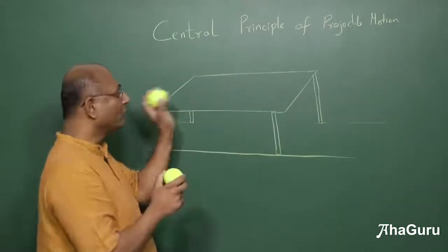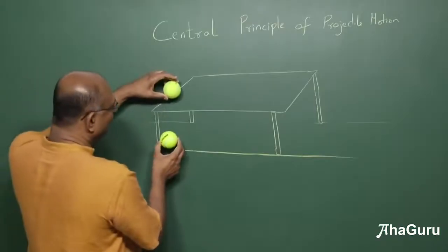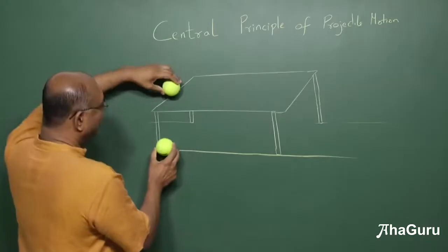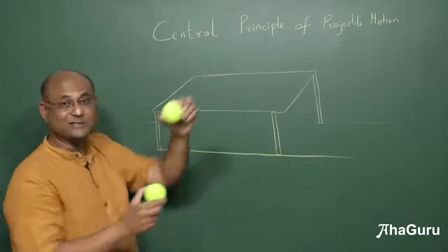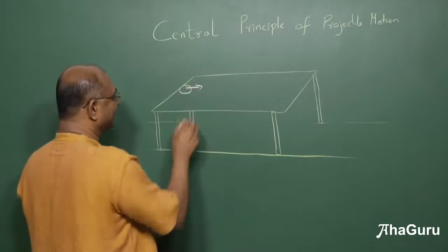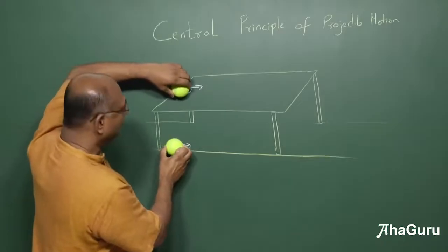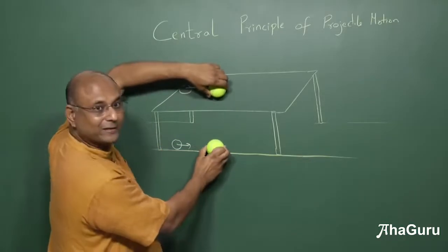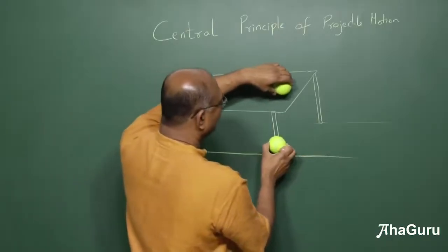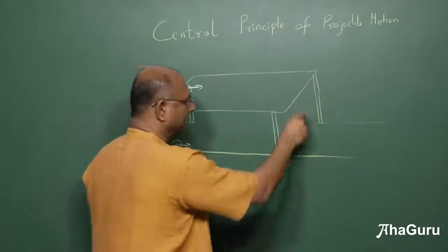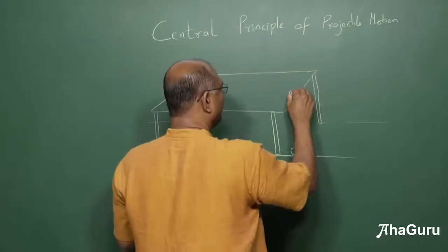I'll show a thought experiment since it's hard to demonstrate directly. Imagine a big table. I have two balls: one on the table surface and one on the ground. I give both the same velocity — say 3 metres per second. The reason I can't do this experiment easily is that giving both exactly the same velocity is very difficult. So just imagine both balls are given the same velocity simultaneously.